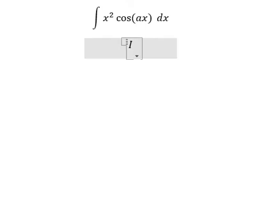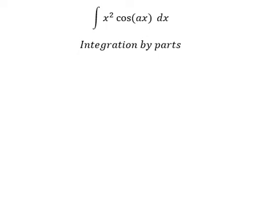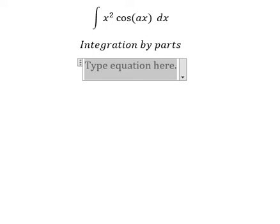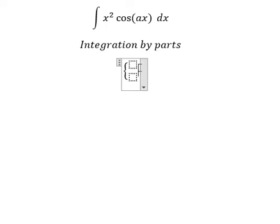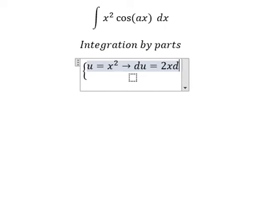We need to use integration by parts. I will set u equals to x squared. Then we need to take the first derivative for both sides, and we have du equals 2x dx.